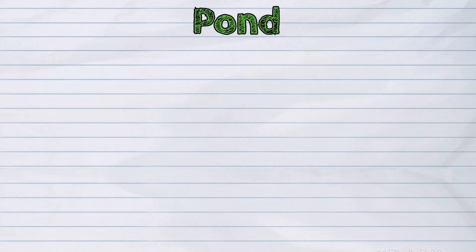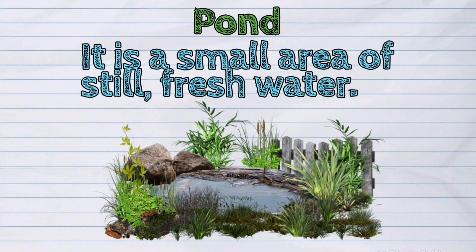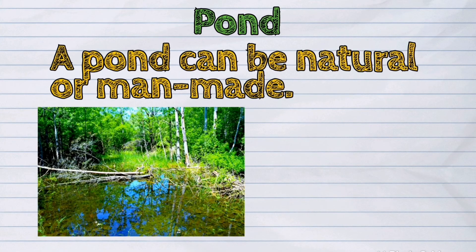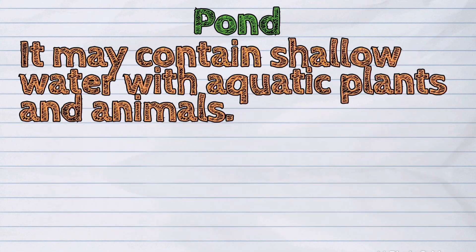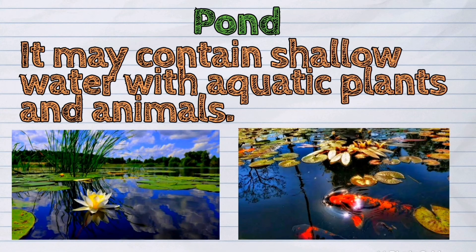A pond is another water form. It is a small area of still fresh water. A pond can be natural or man-made. It may contain shallow water with aquatic plants and animals.